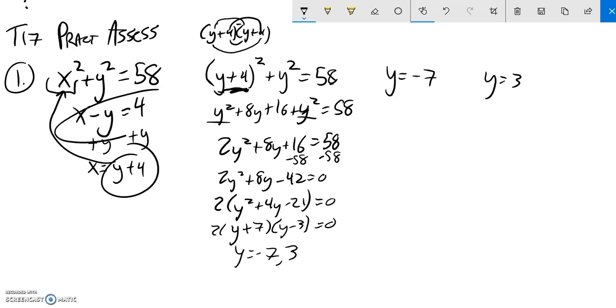When y is -7, I'm just going to plug it in here. x minus -7 equals 4, that means x + 7 is 4. I'll subtract 7 from both sides, so x is -3. So one of my solutions is that point right there when x is -3, y is -7.